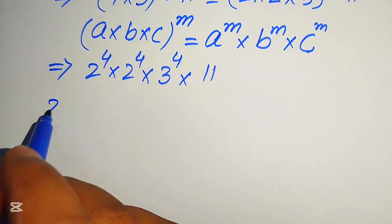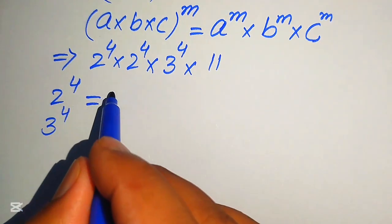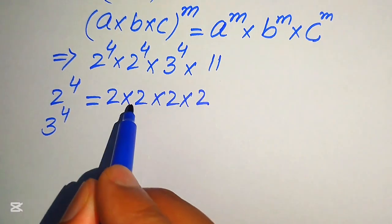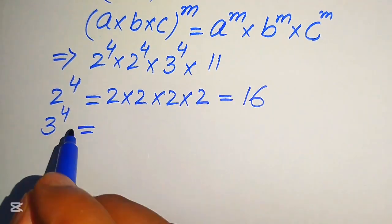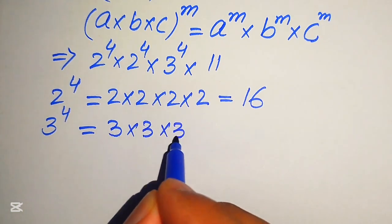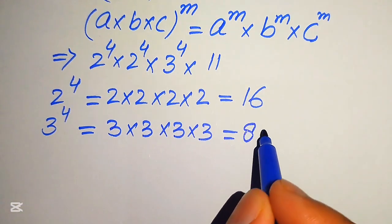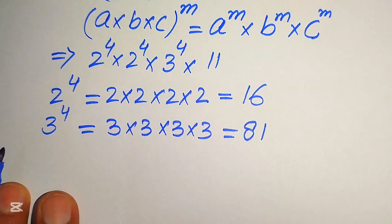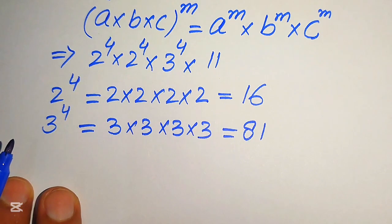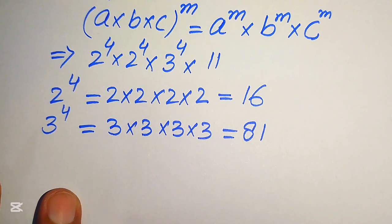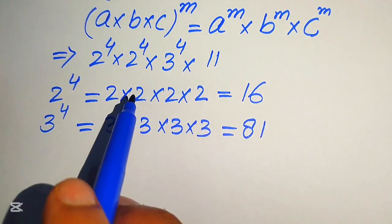Now we need to find the value of 2 to the power of 4 and 3 to the power of 4. The meaning of 2 to the power of 4 is we multiply 2 four times: 2, 4, 8, 16 — so 2 to the power of 4 equals 16. And 3 to the power of 4 means multiplying 3 four times: 3, 9, 27, 81 — so 3 to the power of 4 equals 81. I am showing all these steps for students who cannot do these calculations in their heads.